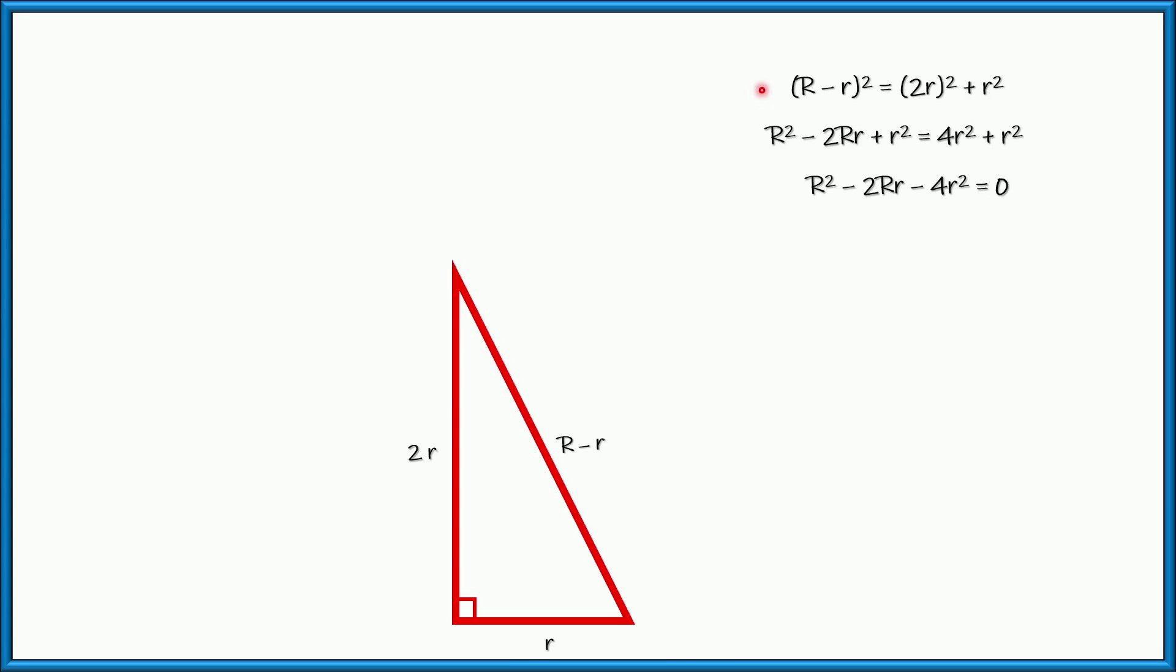Let's clean up our screen so we can see exactly what we're talking about right here. Because we have a right triangle, we can use the Pythagorean theorem as you see on the screen here. We can square and simplify. And this is what we end up with. Capital R squared minus two capital R lowercase r minus four lowercase r squared equals zero. That's a mouthful.